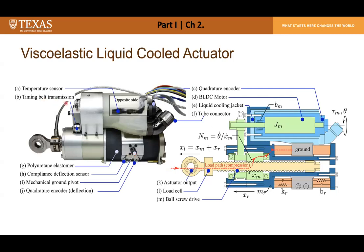We replace the metal spring in the SEA with a polyurethane elastomer. Mechanical power is transmitted when the BLDC motor turns the ball knob via a low-loss timing belt and pulley, causing a ball screw to exert force to the actuator output. The viscoelastic element makes the actuator more shock-tolerant than rigid actuators and enables high output impedance via inherent damping. A liquid cooling jacket around the BLDC motor provides active heat dissipation, and the actuator includes a temperature sensor, load cell, and quadrature encoder for high-quality force measurement.